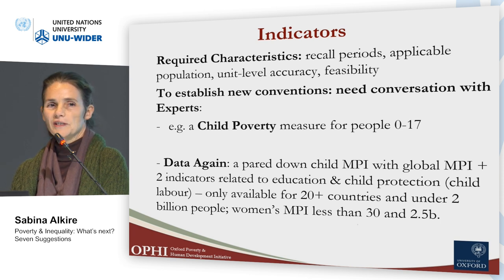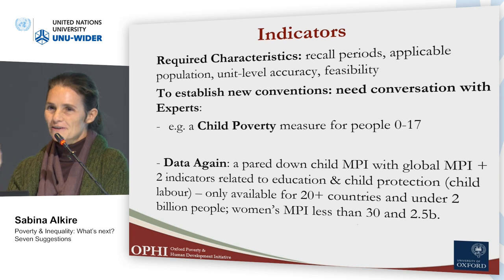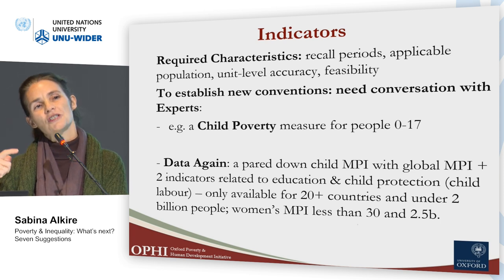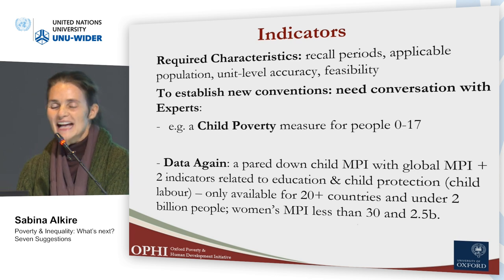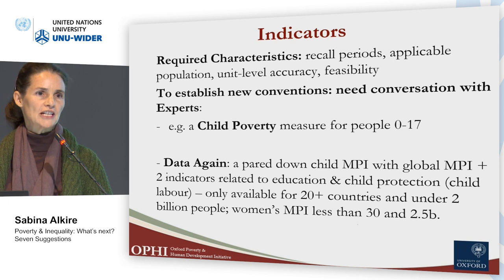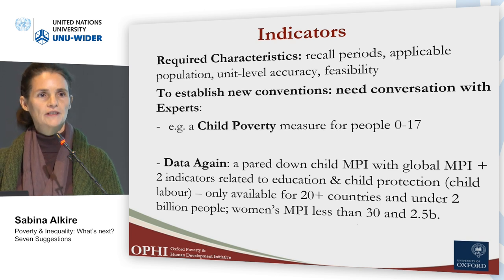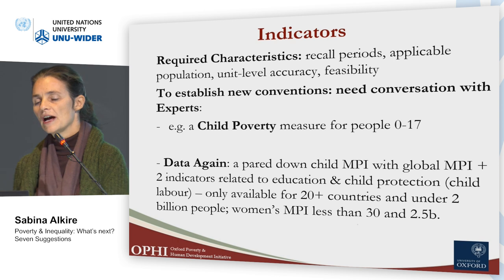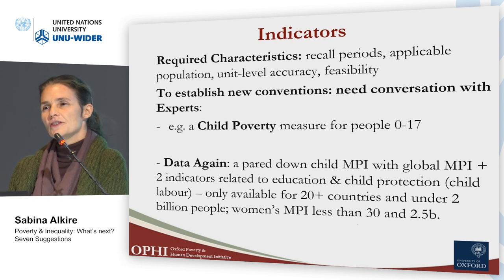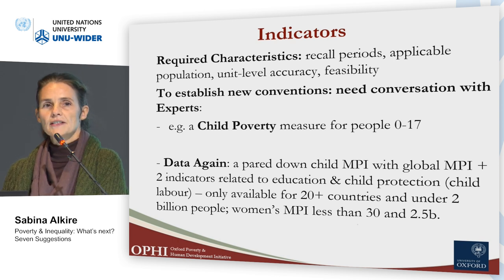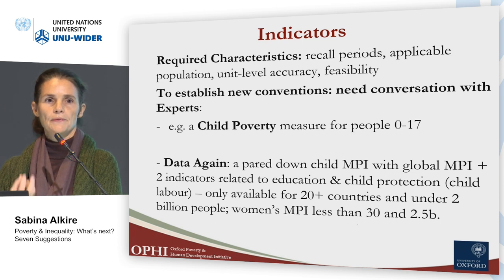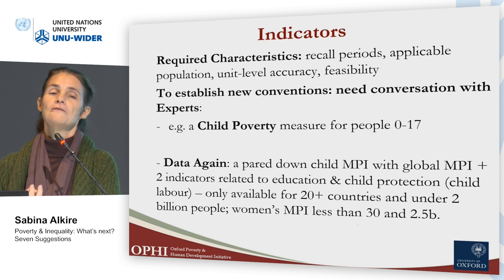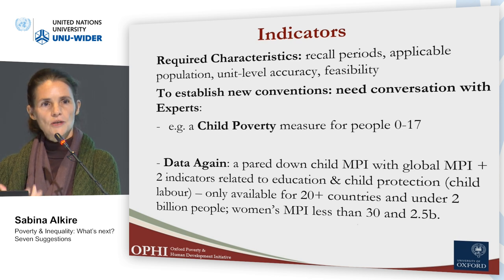The World Development Report shows that schooling is a bad proxy for education, yet every single multidimensional poverty measure officially put out by countries uses years of schooling as an indicator. Similarly, for a novel measure covering children, what is the equivalent of attending school for a one-year-old? There are lots of conventions that still need to be developed — and that's an exciting conversation between sectoral experts and measurement people who need a few strong indicators that proxy others.